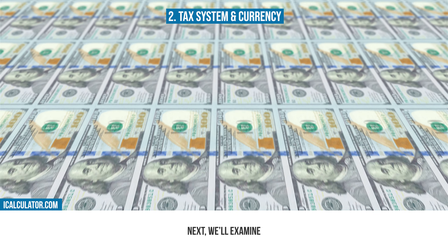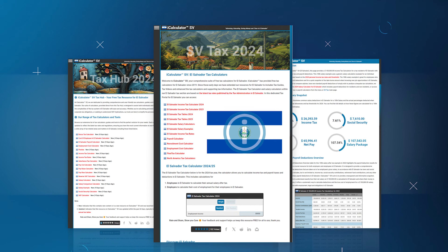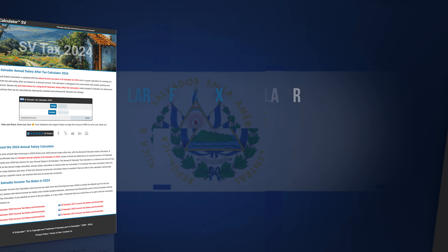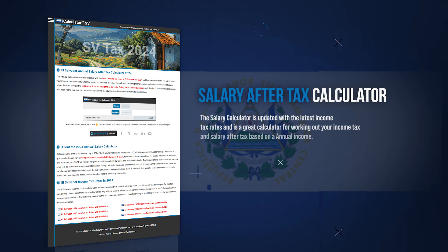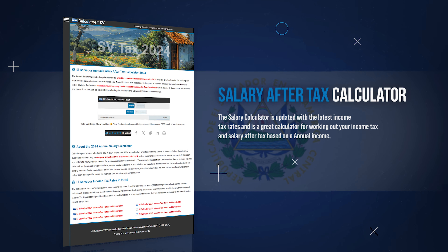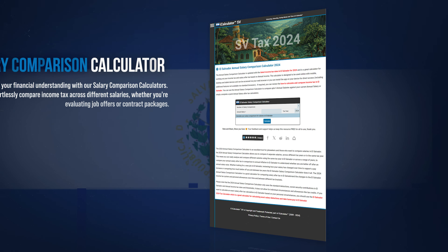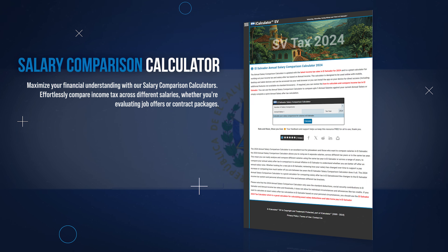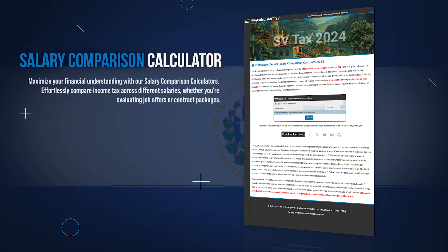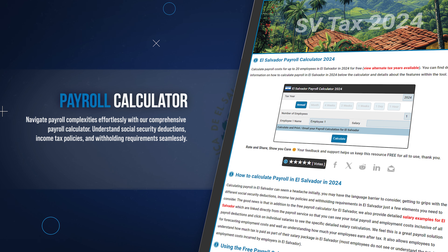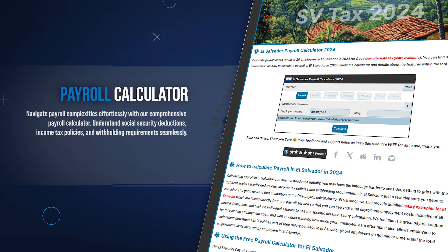Next, we'll examine how iCalculator tools can be effectively employed in this unique financial setting. iCalculator is home to a comprehensive suite of different tools to simplify and clarify your financial planning and decision-making. You can start by understanding your take-home pay with our salary after-tax calculator, which offers a clear view of your net income after all tax deductions. Compare different salaries with our salary comparison calculator, providing insights into where your earnings stand compared to previous years. Streamline your payroll process using our payroll calculator, which is crafted to assist in calculating salaries, taxes, and contributions for businesses.